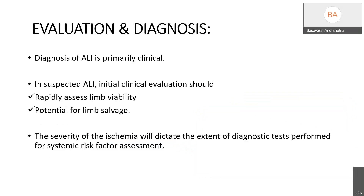Regarding evaluation and diagnosis, the diagnosis of acute limb ischemia is primarily clinical. In suspected cases, the initial evaluation should rapidly assess limb viability and potential for limb salvage. The severity of ischemia will dictate the extent of diagnostic workup performed for systemic risk assessment.